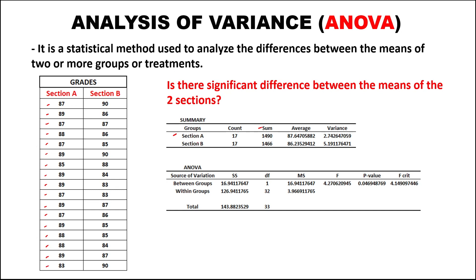We have 17 counts for section A. We can see the sum of all grades, the average for the grades of section A, and the average for the grades of section B. We also have the variance for both section A and section B.